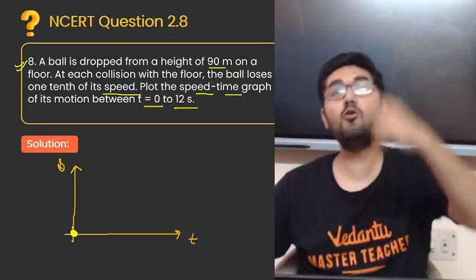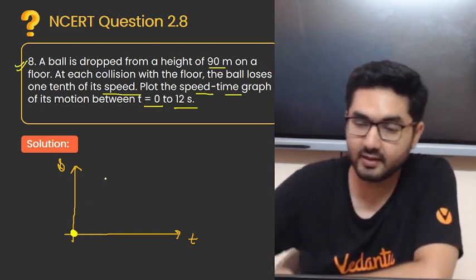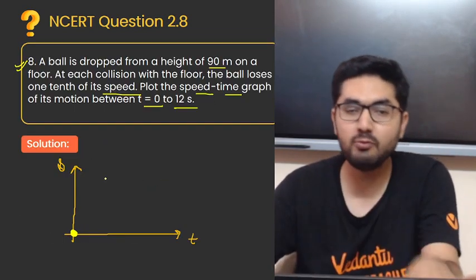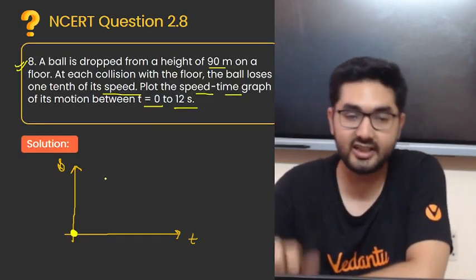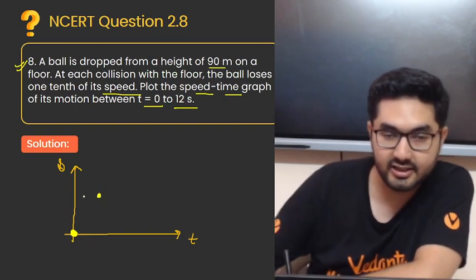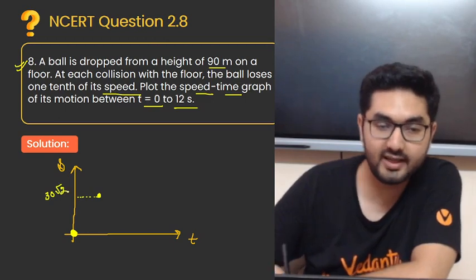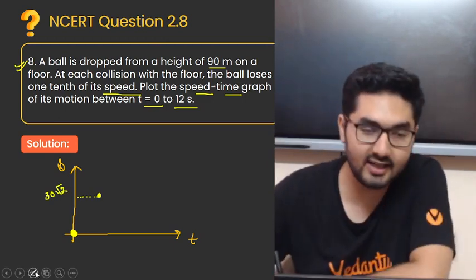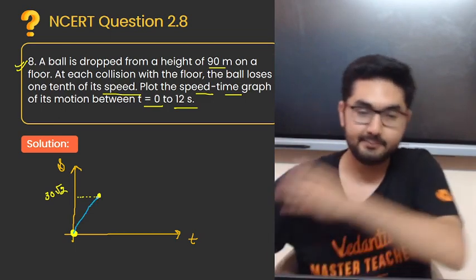Sabse pehle kya, initial velocity 0 nahi hai ball ki, bilkul 0 hai. Initial velocity 0 hai, jab woh ground per touch karegi ball, when the ball is touching the ground, us waqt iski speed kitni hai? Dekho, speed hi poocha hai, to direction ka abhi usme koi lena dena nahi hai. Speed poocha hai, to kitni ho jayegi? 30 root 2. Yahan par maan lete, iski speed ho jayegi 30 root 2. Isko maan lete hoon main 30 root 2. Yahan se aapne ek line draw karegi.